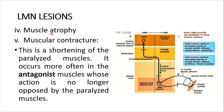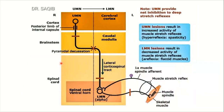Muscle atrophy — wasting of the muscle — occurs, and muscle mass would be decreased in lower motor neuron lesions. Muscular contracture is a shortening of the paralyzed muscles. The muscle is paralyzed, with no activity, and it becomes shortened. Contracture occurs more often in the antagonist muscles whose action is no longer opposed by the paralyzed agonist muscles. As you may recall from upper limb anatomy, there is Dupuytren's contracture — a contracture is a shortening.